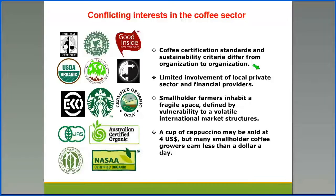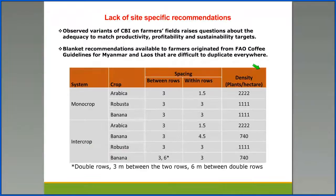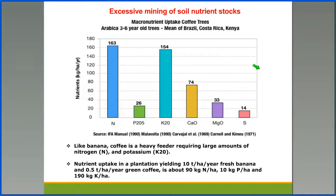There is limited involvement of local private sector and financial providers with regards to promotion of coffee-banana intercropping. There is also a lack of specific recommendations for CBI because most existing recommendations are blanket-developed for coffee in Myanmar and Laos, which are difficult to duplicate everywhere. And lastly, there is excessive mining of soil nutrients — for example, both coffee and banana are heavy feeders, requiring large amounts of nitrogen and potassium.